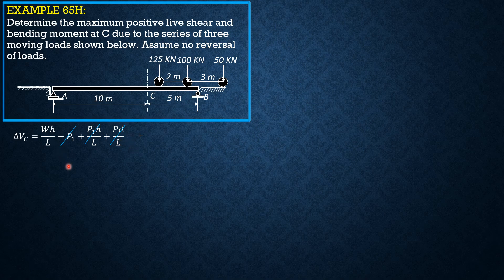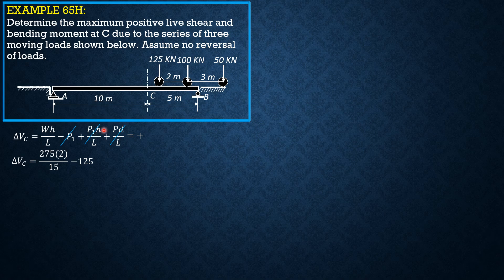When load 2 is over C, P1 has now moved to the left by 2 meters. W would be all loads on the span: 125 plus 100 plus 50 equals 275 kN. P1 is 125, h is 2. So delta V equals 275 times 2 over 15, minus 125, plus 125 times 2 over 15. There is no incoming load term. The sign of this value is negative.